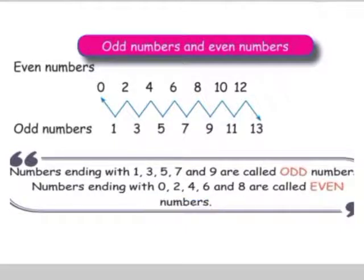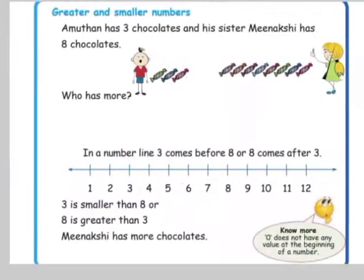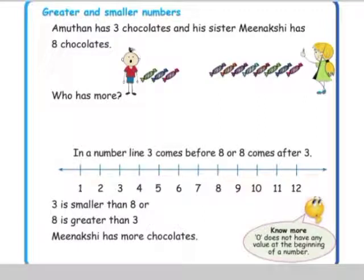Today we are going to learn about greater and smaller numbers. Amodhan has 3 chocolates and his sister Meenakshi has 8 chocolates. Who has more? In a number line, 3 comes before 8.